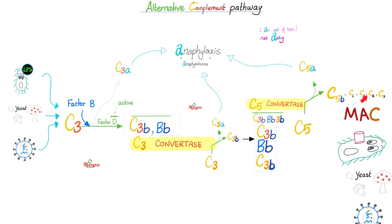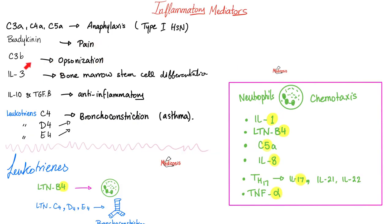C5b continues inside the complement pathway until we end up with the terminal complement complex — the membrane attack complex — which attacks the membrane of the bacteria. The MAC attacks and the bacteria is history. That's why it was paramount for strep pyogenes to inhibit your complement system. C3b not only propels the reaction forward but also functions as an opsonin for opsonization, making the bacteria tasty — that's why strep pyogenes works to degrade, bind, and deactivate your C3b.